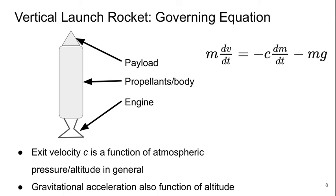We'll consider just a vertical launch rocket. The governing equation here is something that we did see last year in aerospace fundamentals, just a simple differential equation. Our rocket is comprised of a payload that typically would be at the top, a propellant that lives in the body, and then the engine at the bottom.